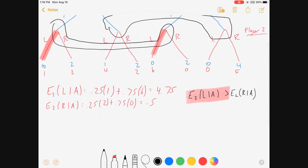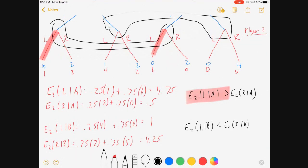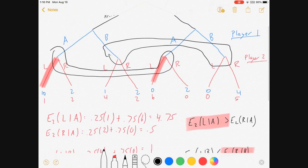We can do the same kind of idea for if player one plays B. We can fill out our expectations. And we get all this stuff. And we see that player two is better off if player one chooses B. Player two is better off choosing R. The expectation of L given B is less than the expectation of R given B. So choose R, it's better.